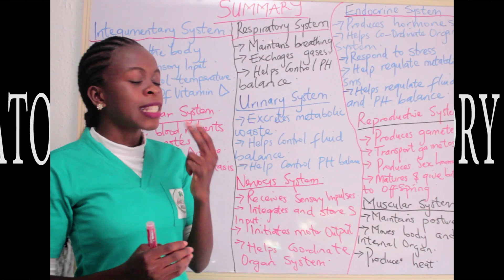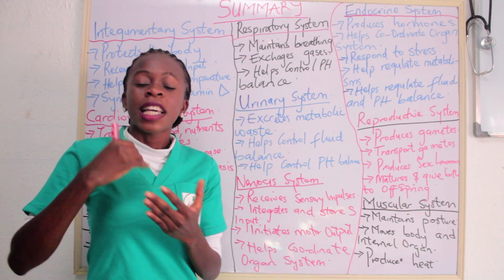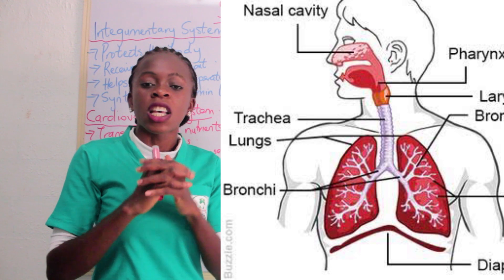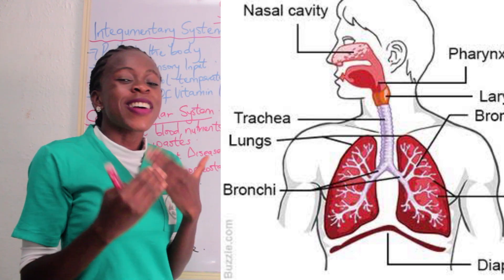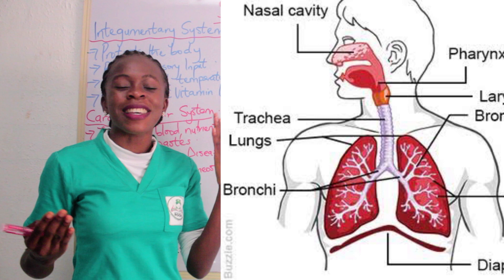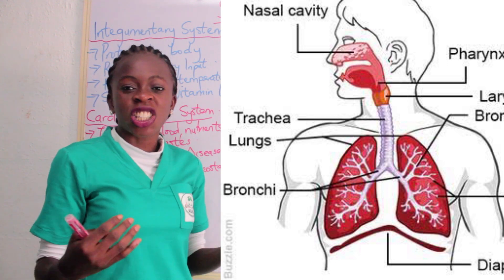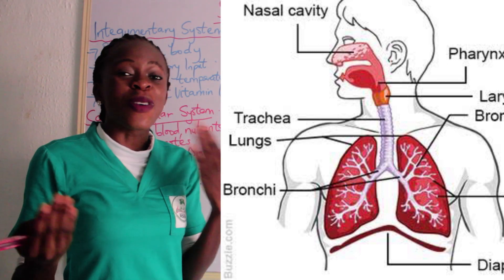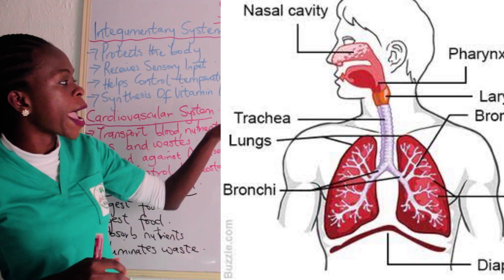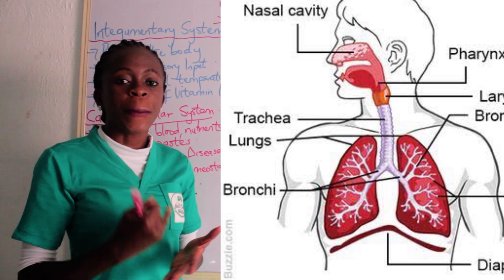The respiratory system has to do with the lungs and its associated organs such as the bronchioles. The respiratory system helps to maintain breathing — without it, it would be difficult for us to breathe effectively. It helps in the exchange of gases such as carbon dioxide and oxygen, and it also helps to control the pH balance.